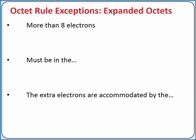Some Lewis structures will have atoms with more than 8 valence electrons, such as 10, 12, or 14 valence electrons associated with a single atom. This is an expanded octet. The atom must be in the third row or below of the periodic table in order to accommodate more than 8 electrons. Nonmetals in the third row of the periodic table begin to have unfilled 3D subshells that can accommodate these electrons.